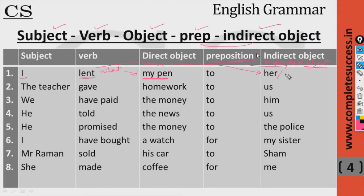For example: 'I lent my pen' — to whom? — 'to her' or 'to Ram.' So 'I lent my pen to Ram' or 'I lent my pen to her.' The answer to 'what?' is 'my pen' — that is the direct object. And if you ask 'to whom?' the answer is the indirect object, which is the prepositional object.